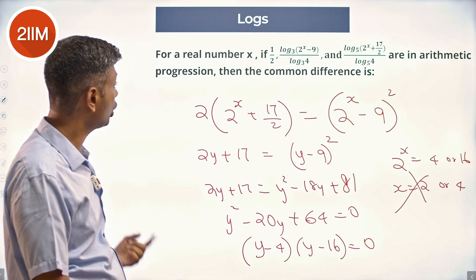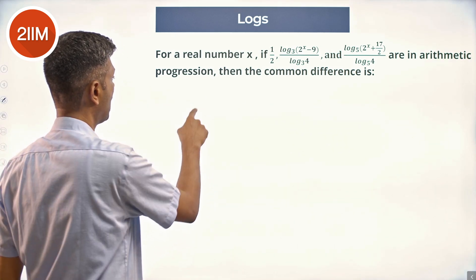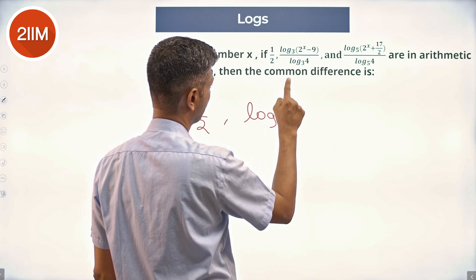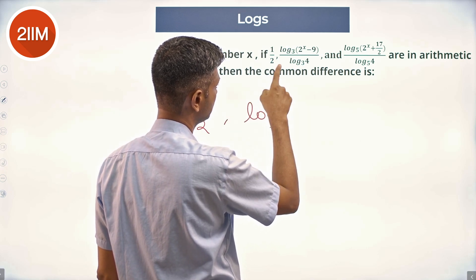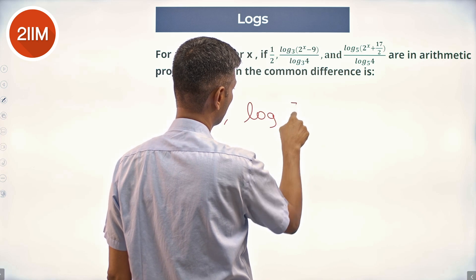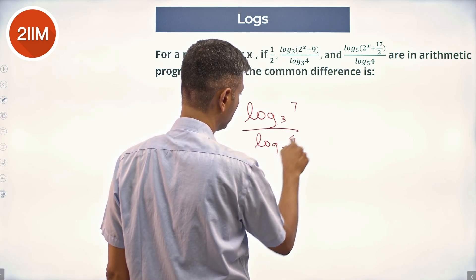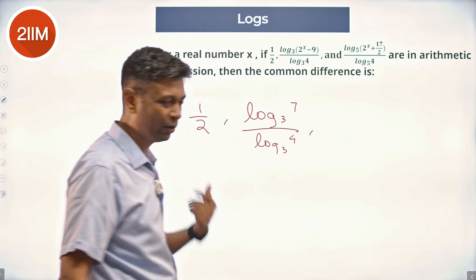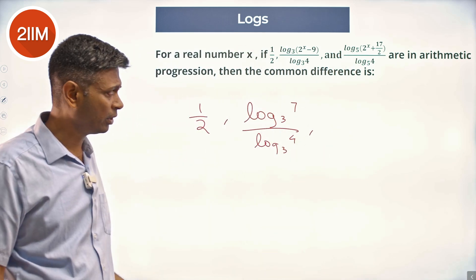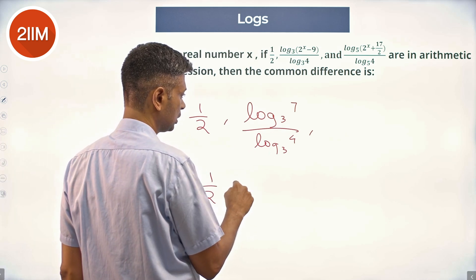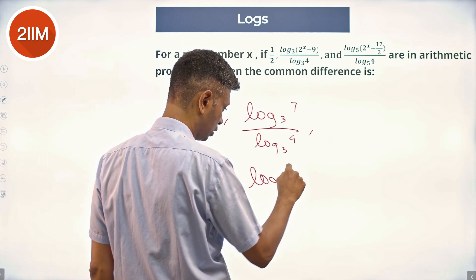So now we need to find the common difference. Let's do this: 1/2, log of 2^4 is 16, 16 - 9 = 7 to the base 3 by log 4 to the base 3, whatever this is. I don't even have to find the third term because I want to find the common difference. I'm going to do this minus this. So: 1/2, log₄(7).